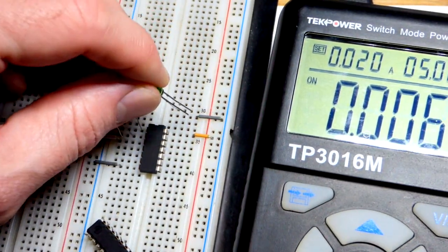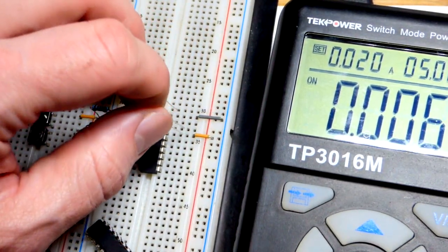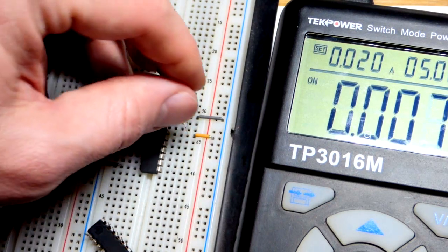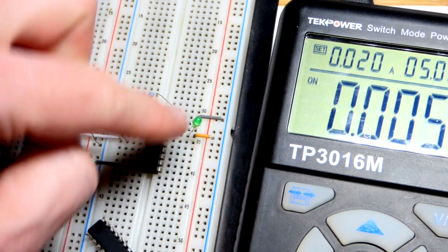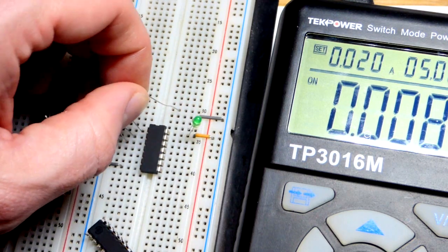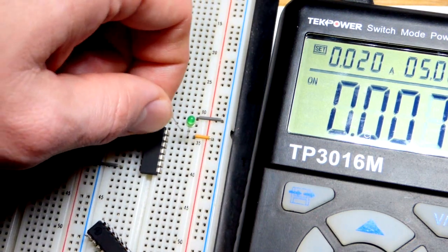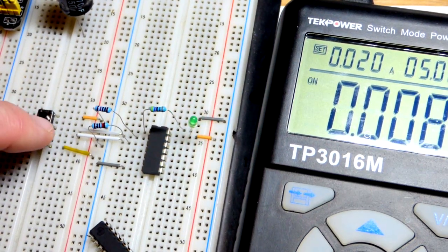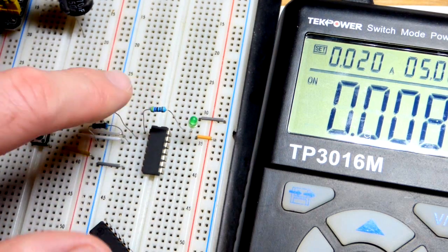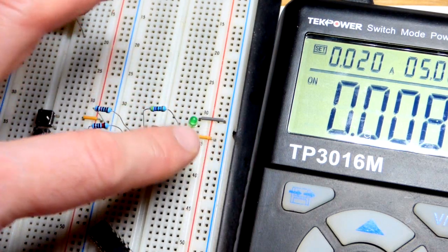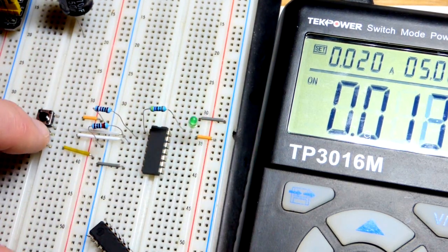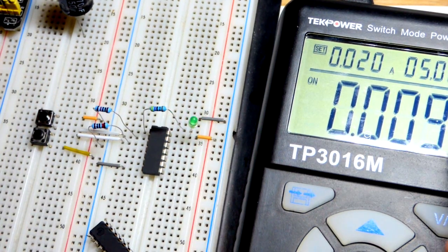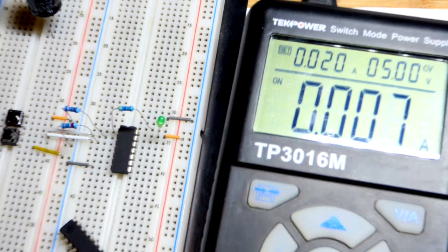We can also, instead of going to the negative rail, turn this around so that the long lead goes to this jumper that goes to the positive rail. Short lead goes up one row, long lead anode, short lead cathode, and we can come to the resistor over there. So if we prefer for whatever reason to go this way, now the LED is on.